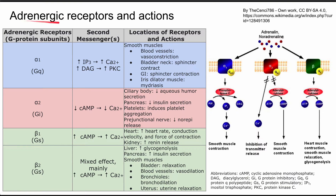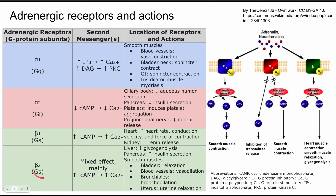This is a summary of adrenergic receptors and their actions throughout the body. There are four main adrenergic receptors — really more than this, but these are the four worth knowing. Alpha-1 is color-coded blue in this diagram and in the table. Alpha-2 is red, and beta-1 and beta-2 are both green.